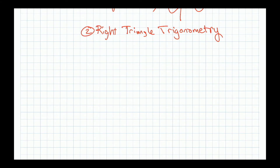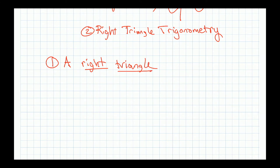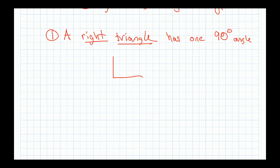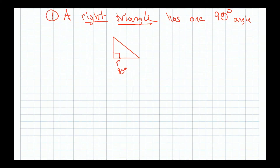So to get into that, we want to talk about right triangles. A right triangle has one 90-degree angle. They mark the right angle with a square marker. The other two angles add up to 90 degrees as well, since the total is 180, but we don't really care about that at the moment.